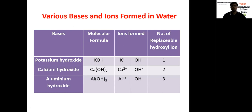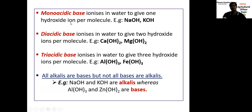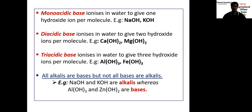This is very important for exams. Monoacidic, diacidic, triacidic bases: based on ionization they are classified. Monoacidic base ionizes in water to give one hydroxyl ion per molecule — NaOH and KOH have only one hydroxyl ion. Diacidic base ionizes to give two hydroxyl ions per molecule — calcium hydroxide and magnesium hydroxide each contain two hydroxyl ions. Triacidic base ionizes to give three hydroxyl ions per molecule — aluminium hydroxide, Al(OH)3, and ferric hydroxide, Fe(OH)3, each contain three hydroxyl ions.